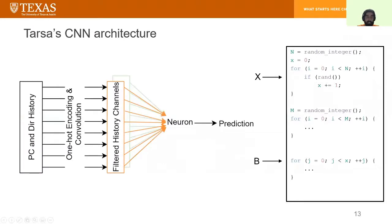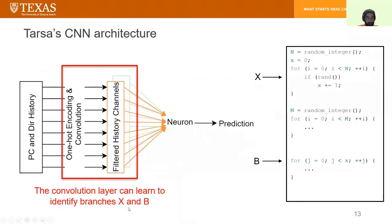Now let's see how Tarsa's CNN, which is our prior work, is actually able to learn this input independent behavior. Tarsa's CNN consists of two main components. The first component is the convolution layer which can learn to identify branches X and B through its different channels, which can act like the filtered histories that I showed in the previous slides.